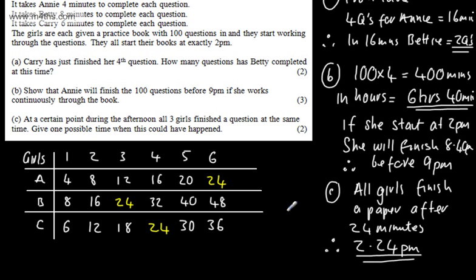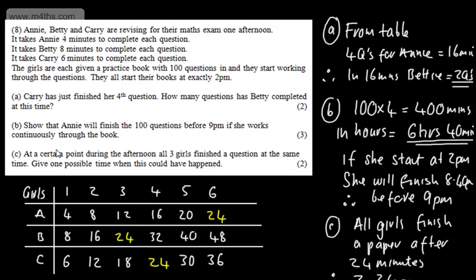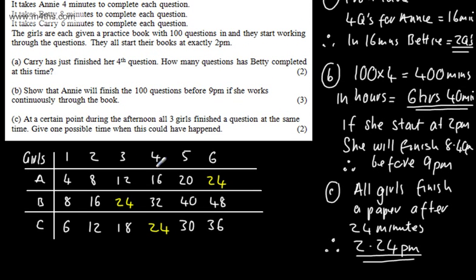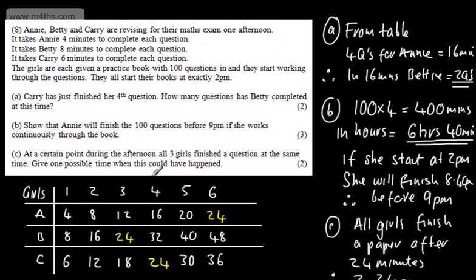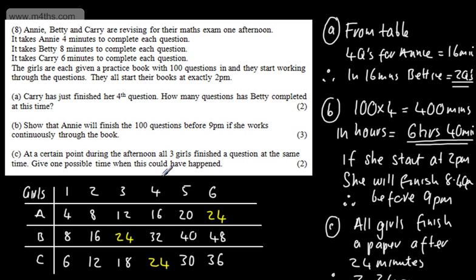Again, with this table of values, I've taken now a lowest common multiple problem and just simply made it a lot easier. If you want to, you can go ahead and just think about the lowest common multiple. From the table though, we can pick these values. And remember, they started at 2 PM so we have to give this in context. We can't just say 24, or she does 6, she does 3, and she does 4. We have to say, all girls finish paper after 24 minutes. Therefore, 2.24 PM is one possible time.